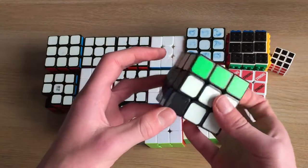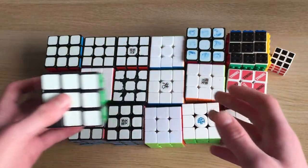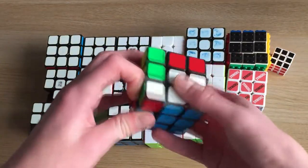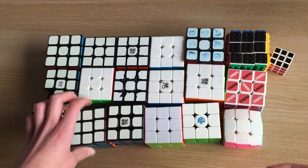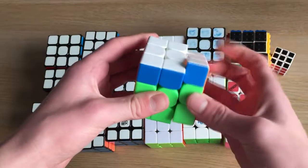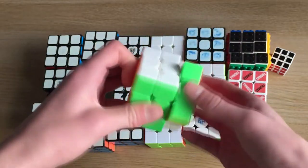Then we have the second half of my Siamese Cube, which is the QiYi Sail Legend, and another QiYi Sail Legend which isn't broken. A MF3RS3, which I got my first sub-10 single, and I kind of used as my main on and off for a little bit.